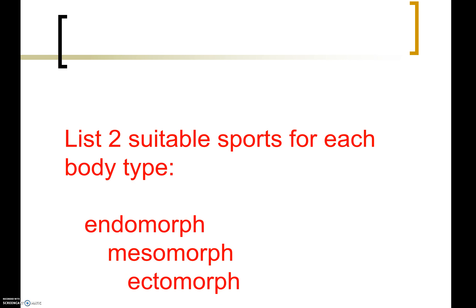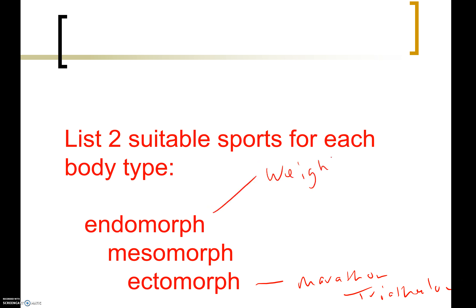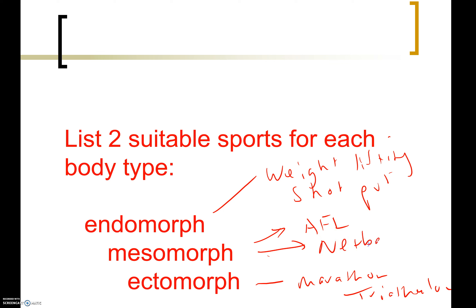Think of two suitable sports for each body type. Ectomorphs: marathon and triathlon. Endomorphs: weightlifting and shot put. Mesomorphs: AFL and netball. As long as you know sports that fit each somatotype and understand how it affects performance, you should be right answering any questions related to that.